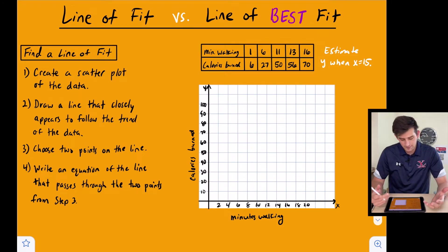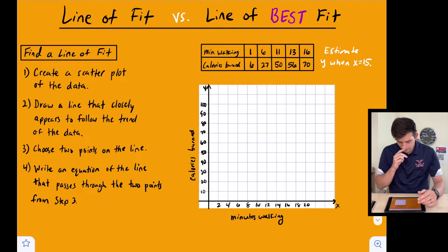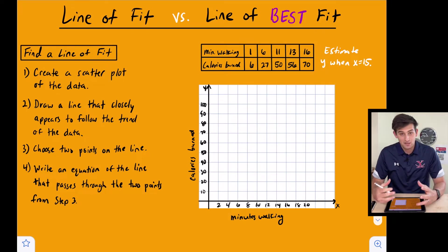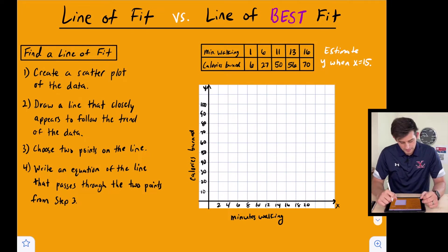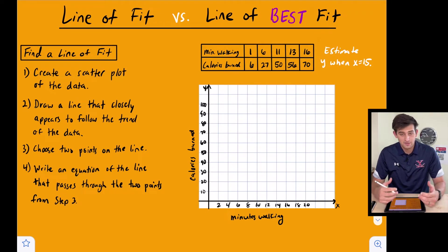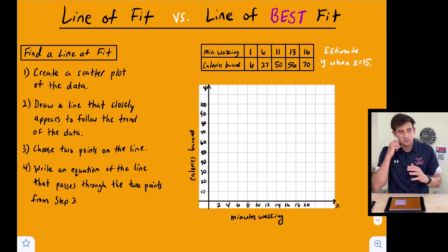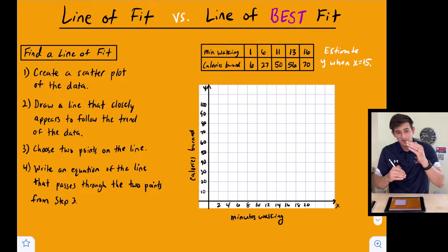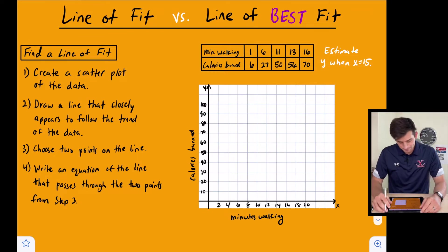First, we want to create a scatter plot of the data. Then we're going to draw a line that closely appears to follow the trend of the data. When we do this, we want to draw a line where we have approximately the same number of points above our line as we do below our line.